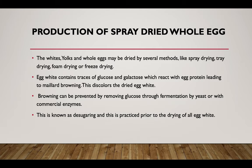For production of spray-dried whole eggs, the white, yolk, and whole egg may be dried by several methods including spray drying, foam drying, or freeze drying. Egg white contains traces of glucose and lactose which react with egg protein leading to the Maillard reaction, causing browning. This discolours the dried egg white. Browning can be prevented by removing glucose through fermentation by yeast or with commercial enzymes. This process is known as desugaring and is practiced prior to drying of the egg white.